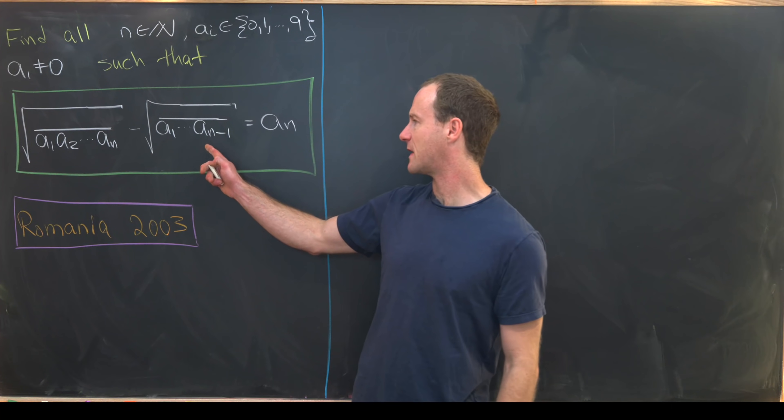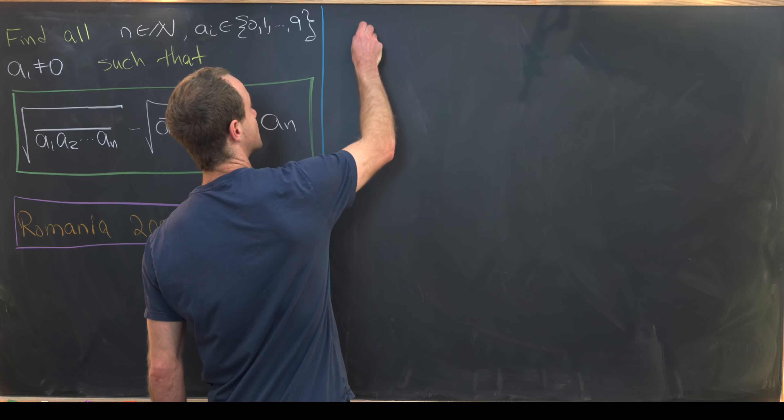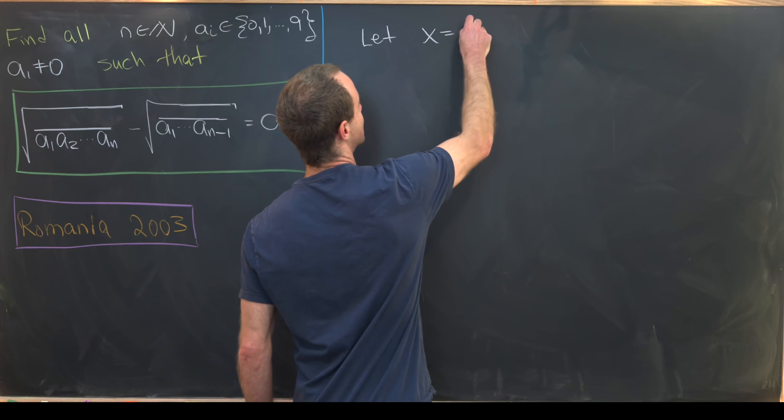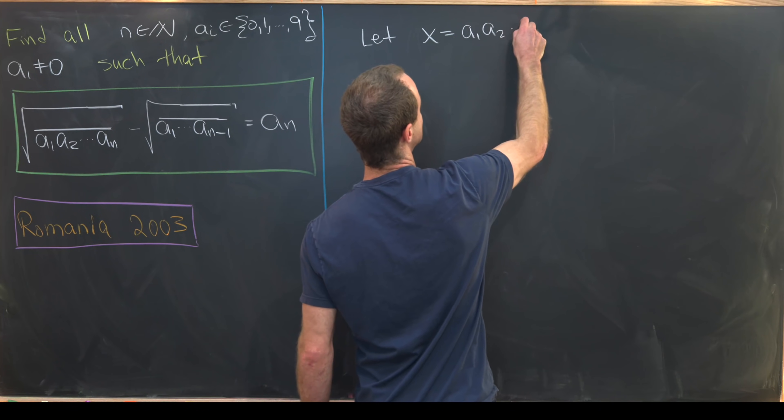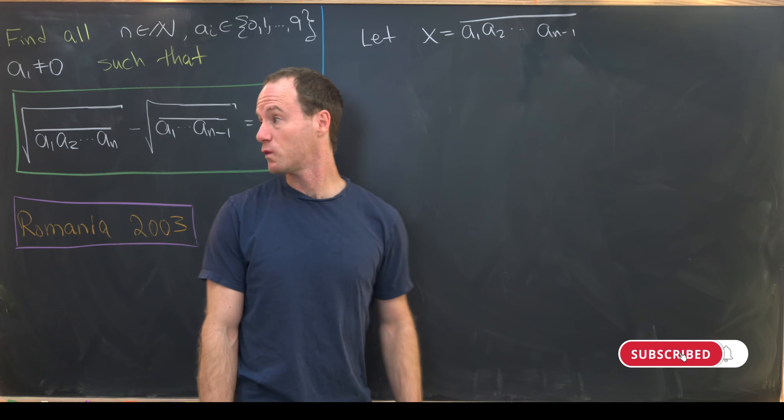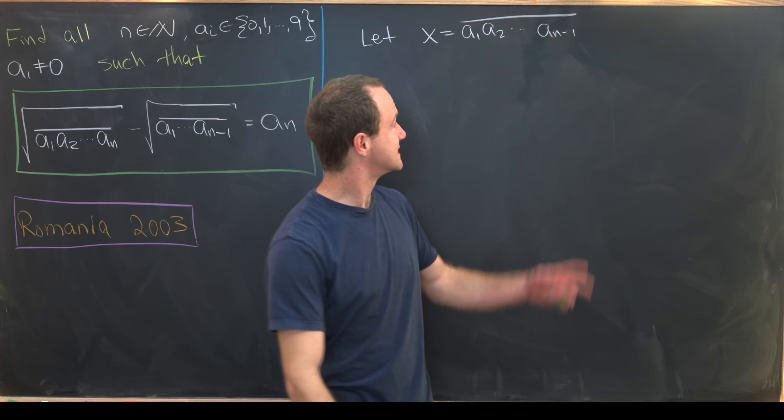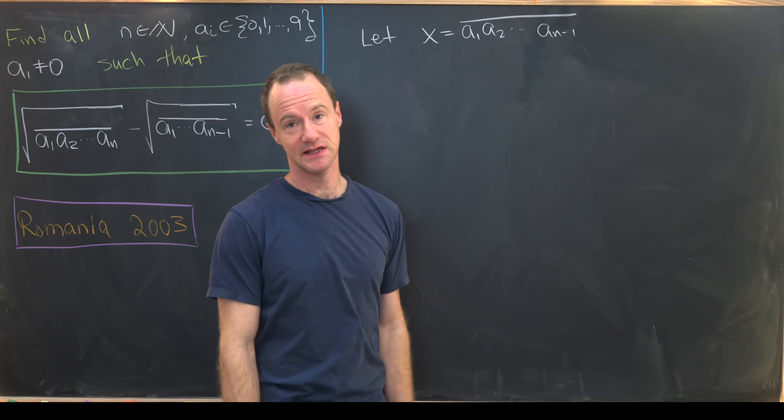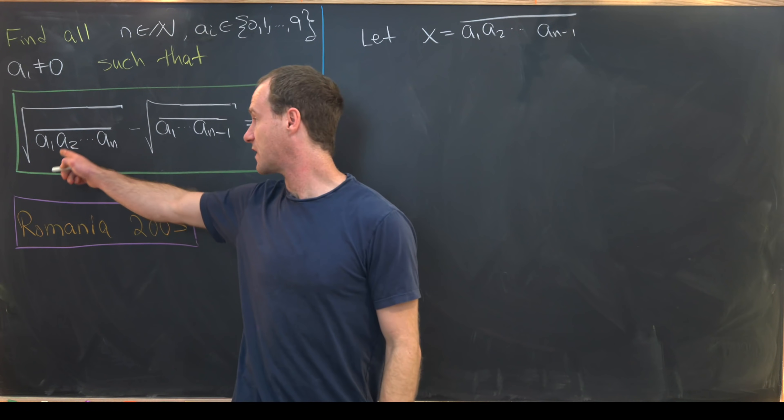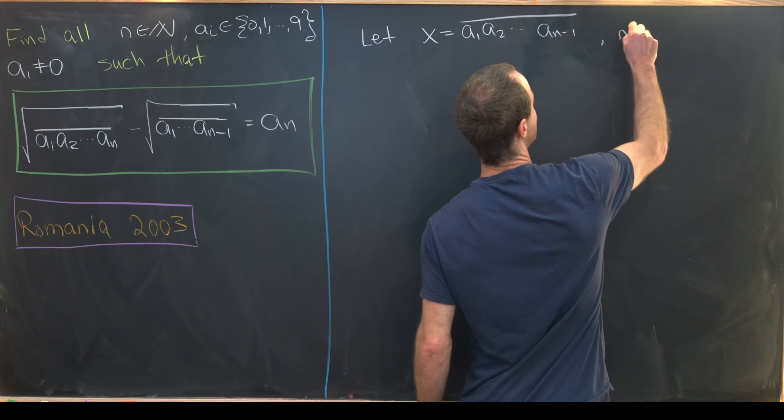So I'll start by setting this number right here, a1 up through an, equal to some variable. Let's let x equal this number with digits a1, a2, all the way up to an-1. And then we'll notice that this object over here is exactly 10 times this, that moves everything over to the left one, plus an. So maybe let's just make that observation.